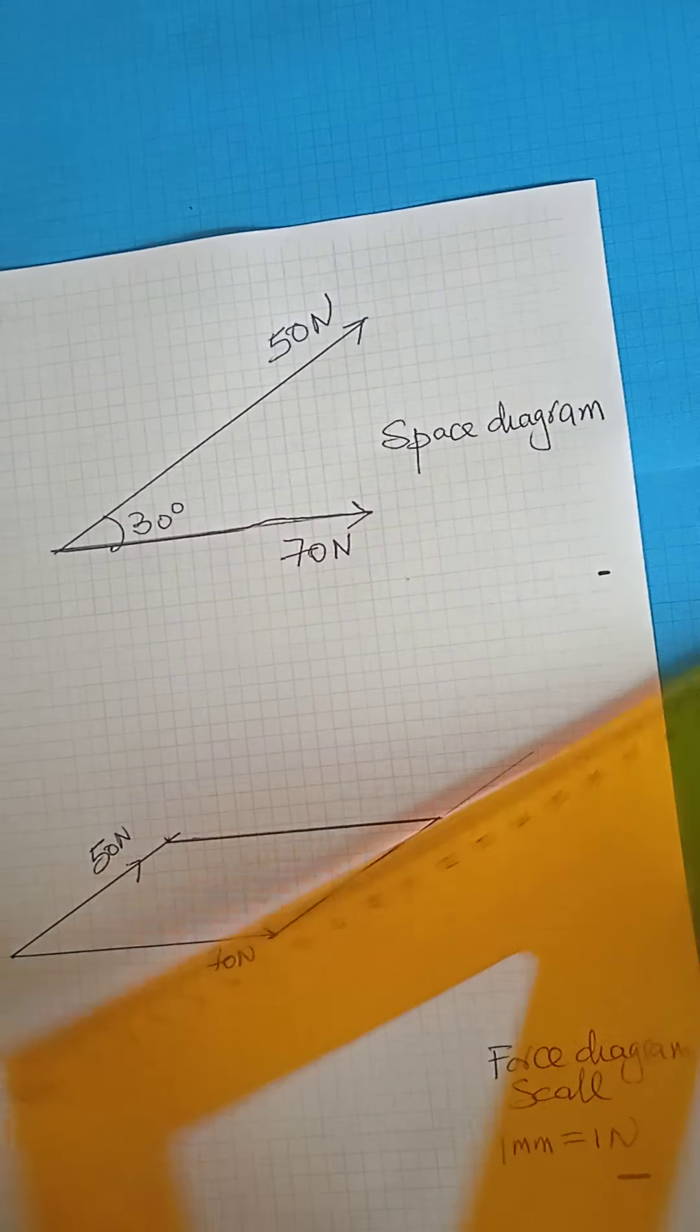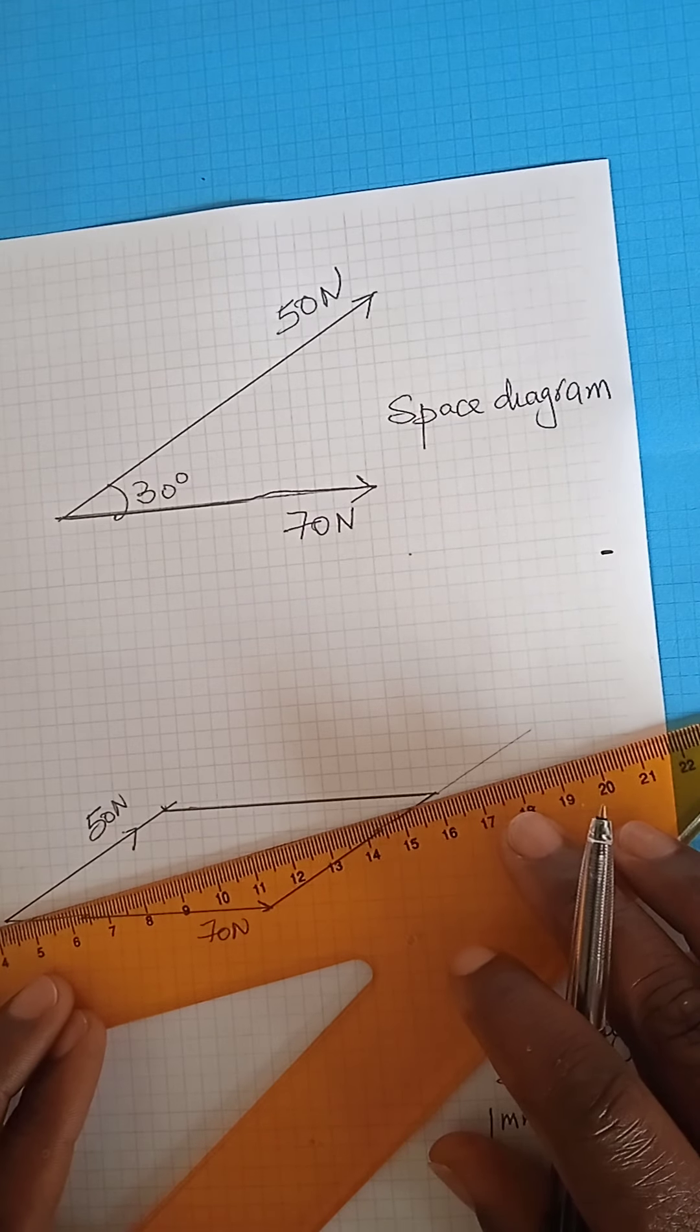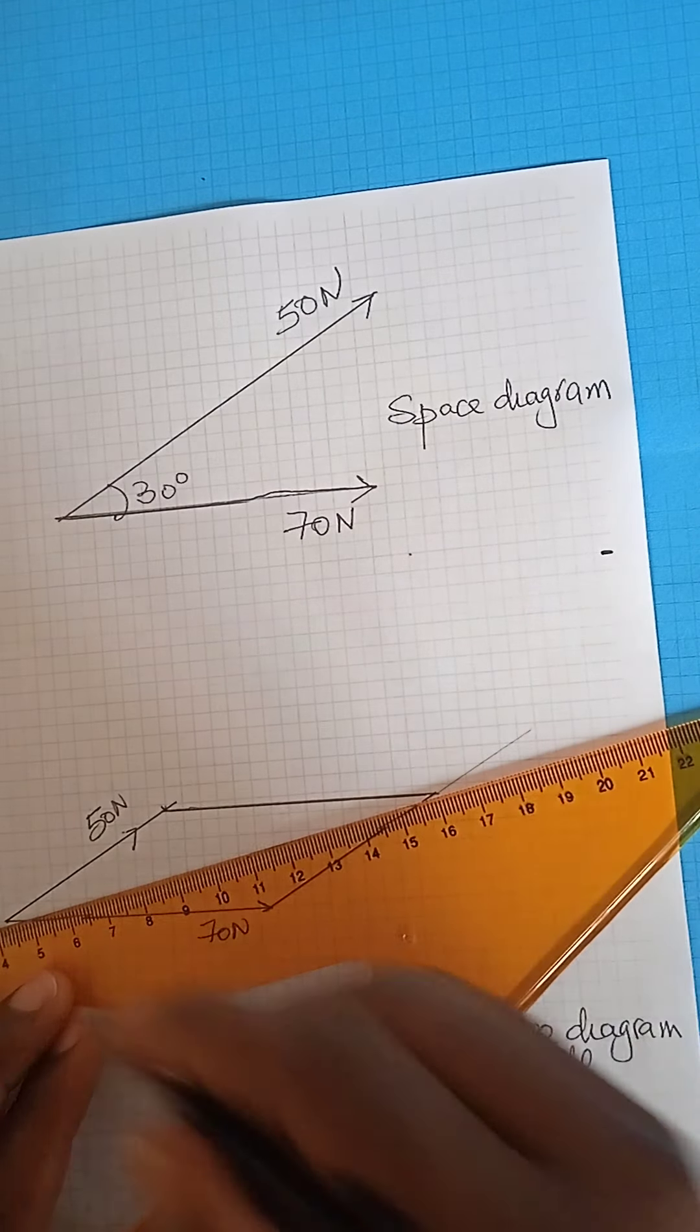Then you join now the diagonals. So once you join this diagonal, then it means this is your resultant force.